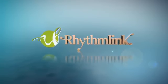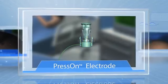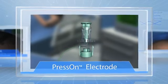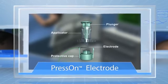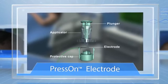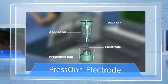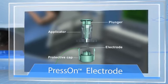RhythmLink introduces the disposable press-on electrode. This innovative electrode is housed in its own individual dispenser. The dispenser consists of the plunger, applicator, protective cap, and electrode with lead wire.